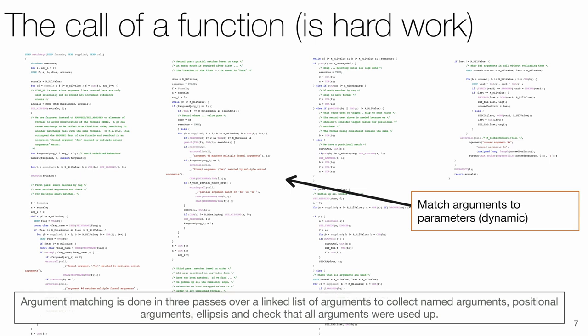In short, it first looks for exact named matches. After that, the partial name matching takes place, while looking out for the ellipsis parameter. Finally, the last pass matches the still unused arguments by position and collects the rest in the dots list.